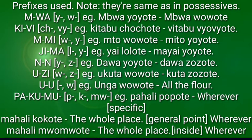The Ki-vi class uses 'cho' and 'vyo': kitabu chochote, vitabu vyote. The M-mi class uses 'wa' and 'ya': mto wawote, mito yoyote — meaning 'any river' and 'any rivers.'